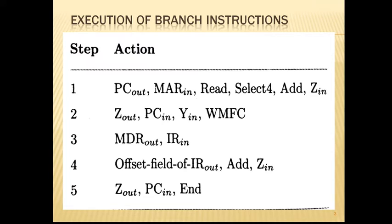This phase will end when the instruction is loaded into IR in step 3. Then the offset value will be extracted from the IR by the instruction decoding circuit. The offset value is extracted with the help of the instruction decoding circuit, which will also perform sign extensions if required.